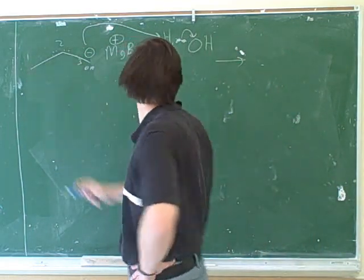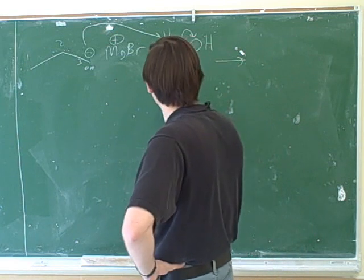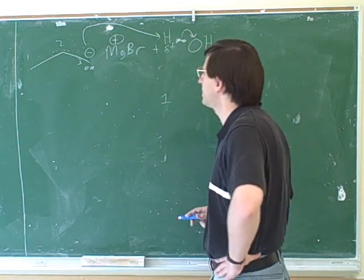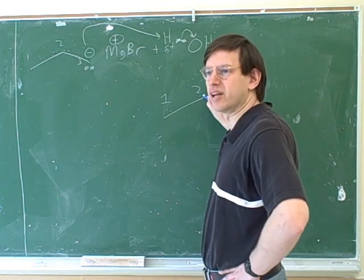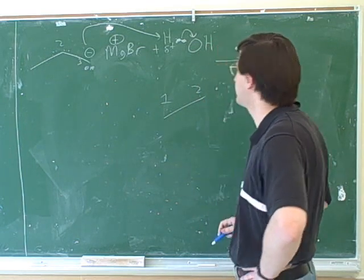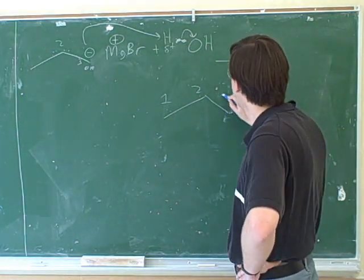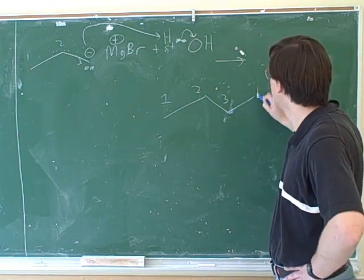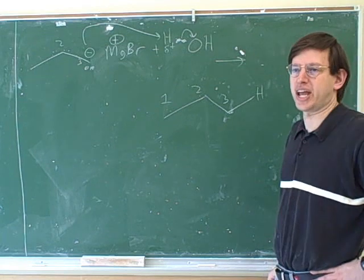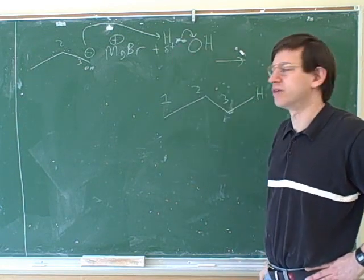All right. So let's start with this compound here. So I'll start with the number one carbon. Who's the number one carbon attached to? Number two. Number one's attached to number two. And who's the number two attached to? Three. And who's the number three attached to? A hydrogen. A new hydrogen. And that's the end of the chain, because we're breaking this bond over here.